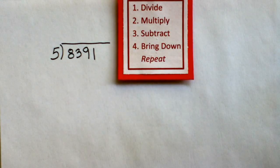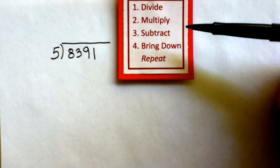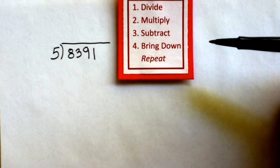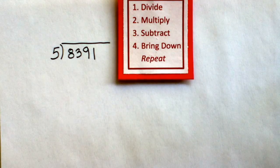The first step is to divide. The second step, multiply. The third step, subtract. The fourth step, bring down. And we repeat that process. As we go through our problem, I will try to point out each one of these steps.